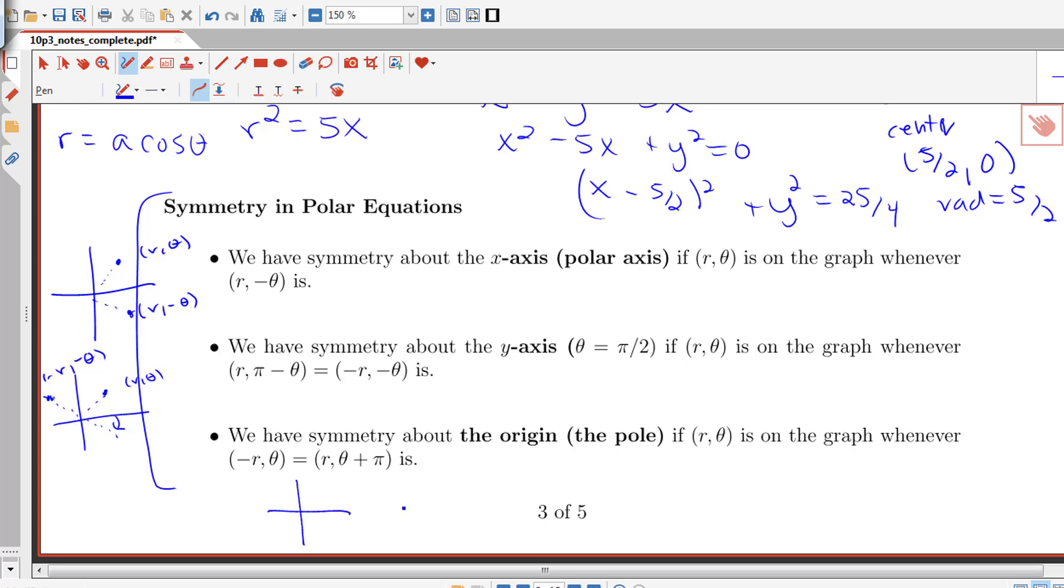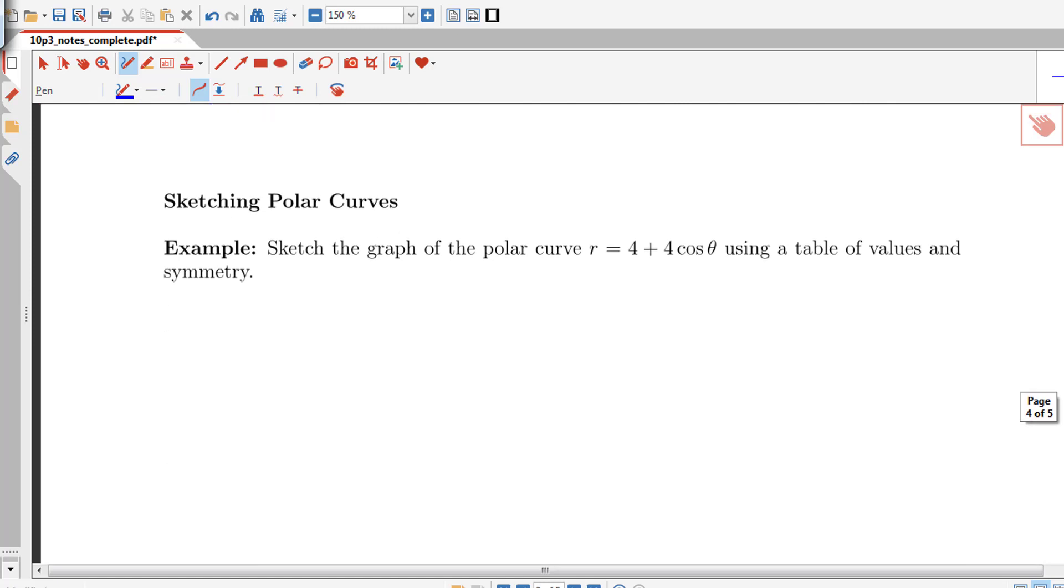We could also have symmetry about the pole, about the origin. If I have a point here, this is r theta and also a point down here of negative r comma theta. So if we can identify that we have these different kinds of symmetries, then that can simplify the problem in some cases.